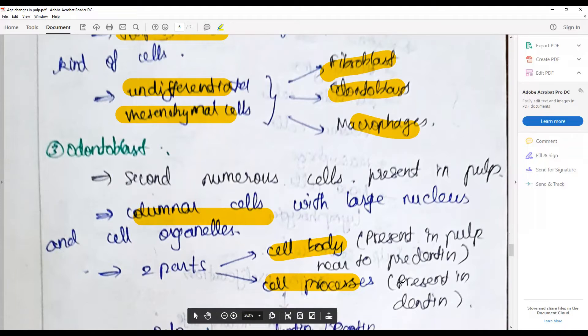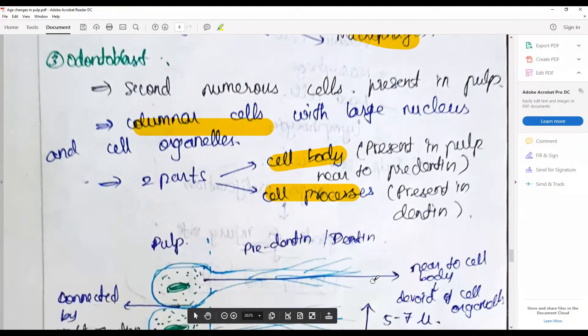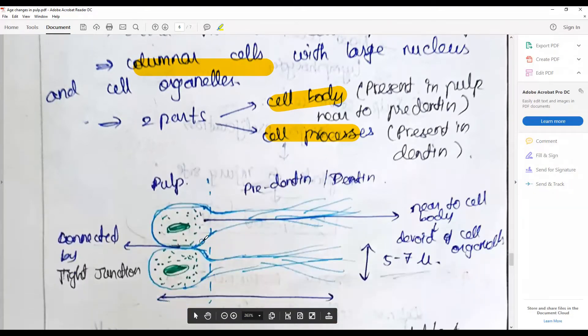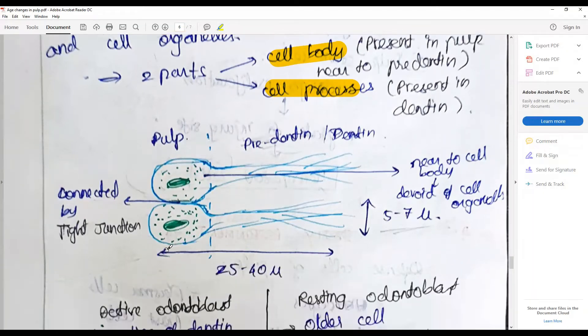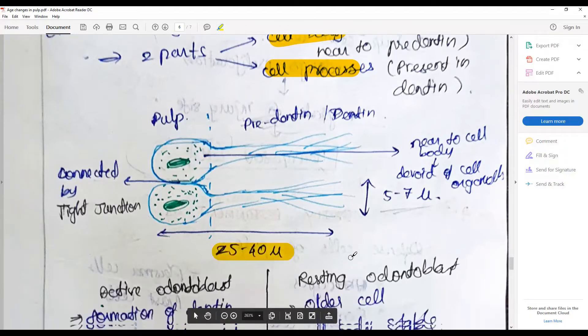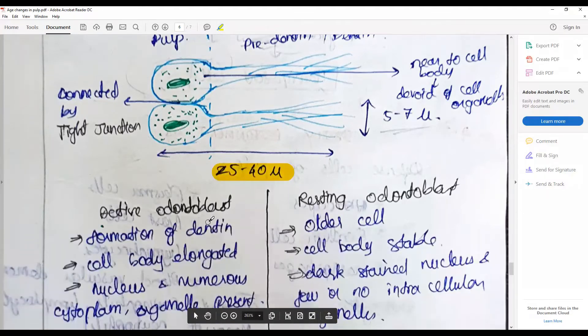The processes extend as odontoblastic processes into the dentinal tubules. Draw a neat diagram saying that junctions are connected by tight junctions, about five to seven micrometers thick, and the entire process is about 25 to 40 micrometers thick.